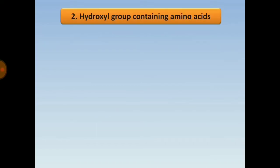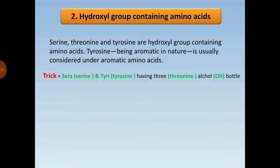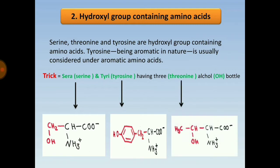The next classification is hydroxyl group-containing amino acids: serine, threonine, and tyrosine. Note that tyrosine is aromatic in nature and is also considered under aromatic amino acids. A trick: 'Sarah and Tyree having three alcohol bottles' — alcohol representing the hydroxyl (–OH) group, covering serine, tyrosine, and threonine. The –OH group is visible in each of their structures.